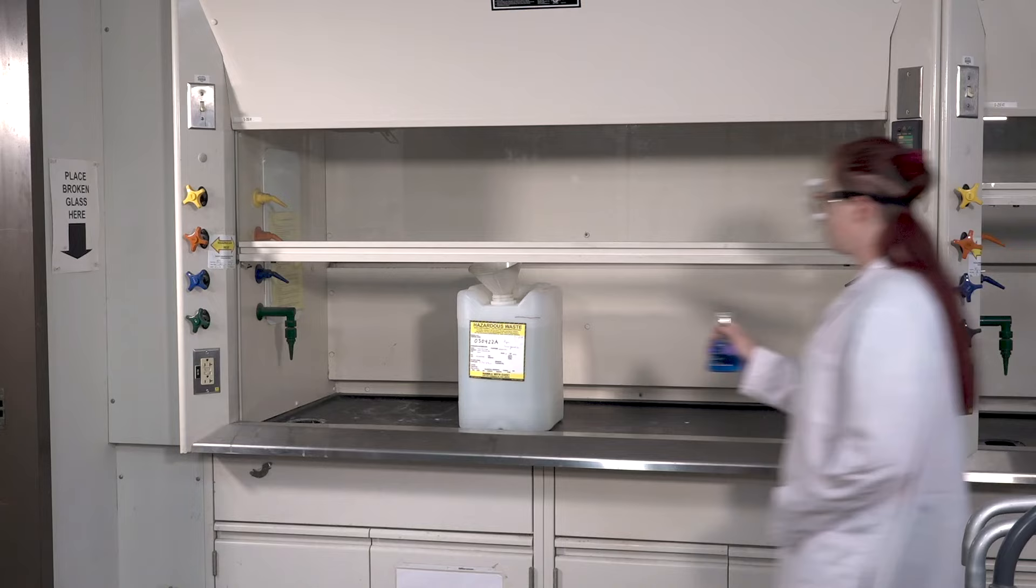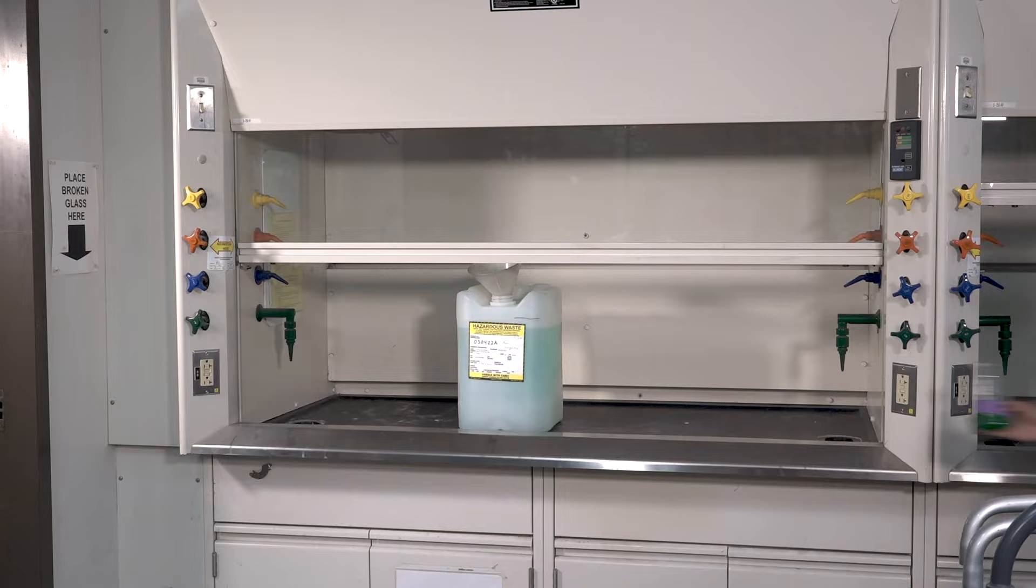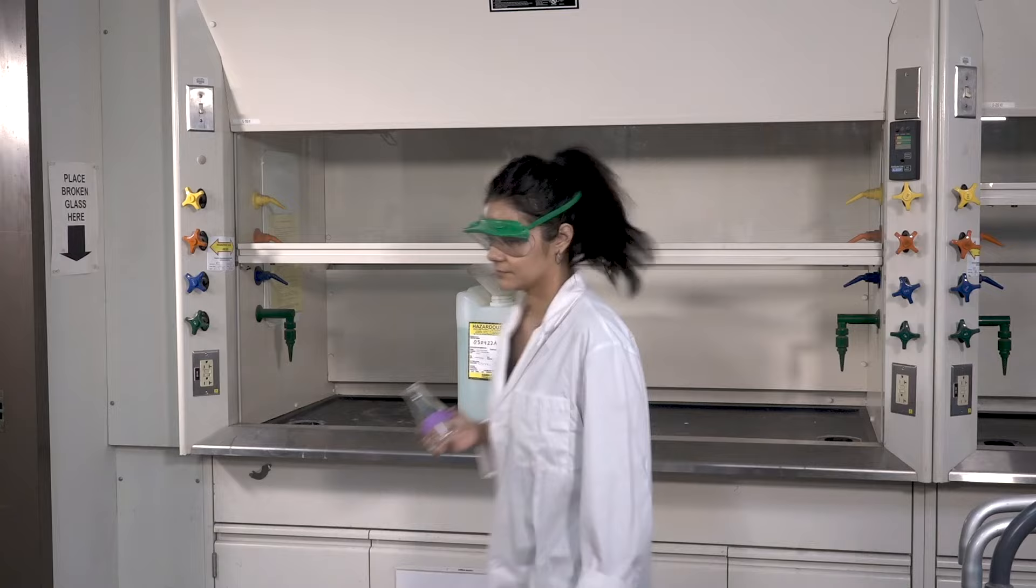All waste generated in the lab should be disposed of in the proper waste container. Never dump anything down the drain unless your instructor says it's okay. Waste containers are located in the fume hood and will be marked with the particular type of waste. If you do not see a waste container, ask an instructor before disposing of your waste.